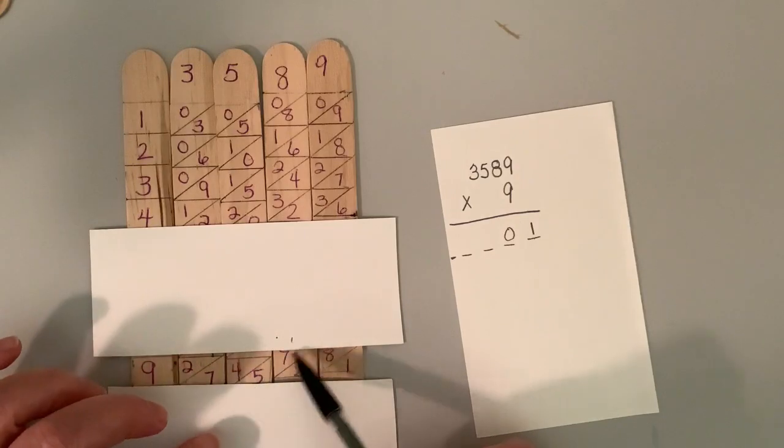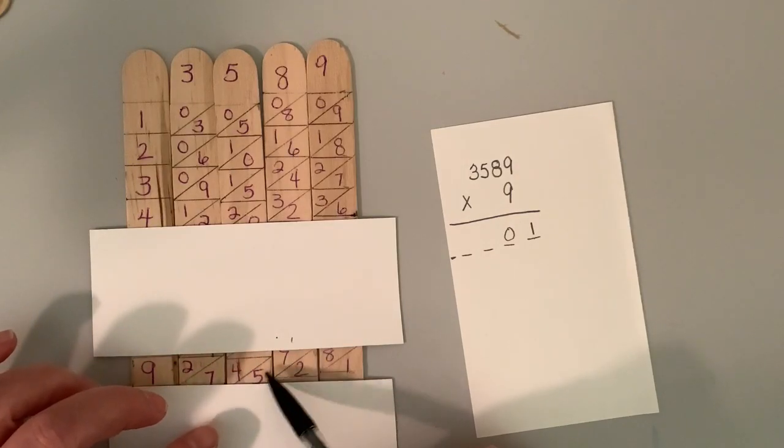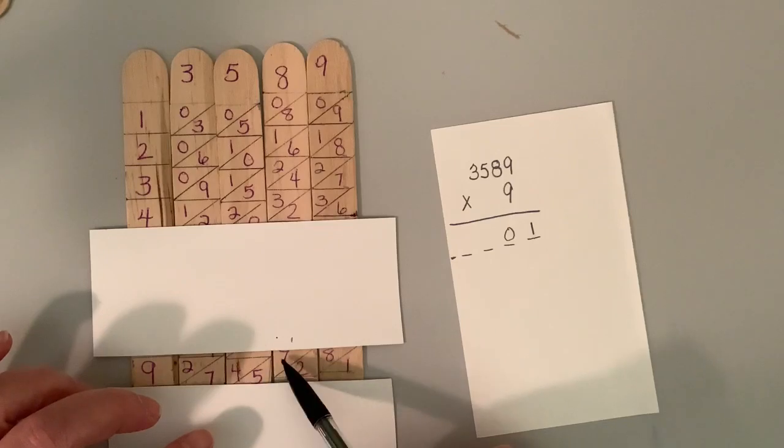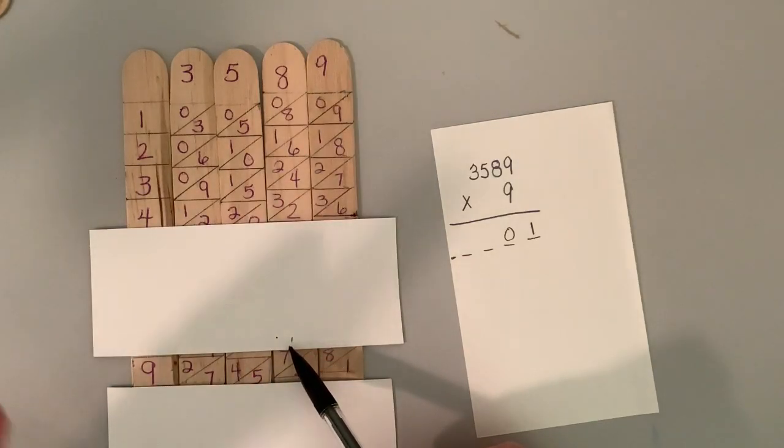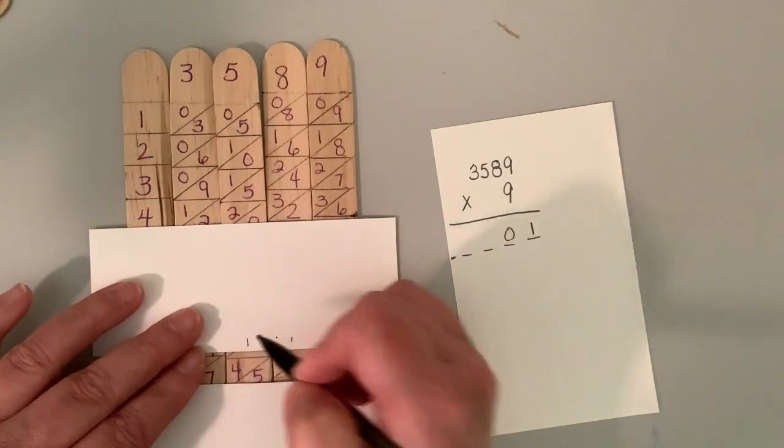So now in my hundreds diagonal, I have five plus seven plus one. So five plus seven is 12 plus one is 13. So if I have 13 hundreds, that's really 1300.